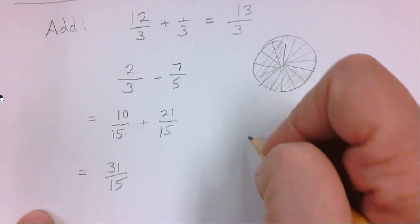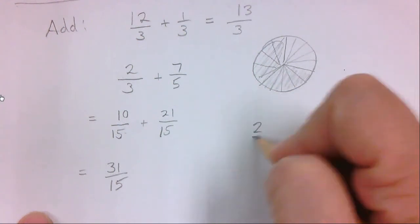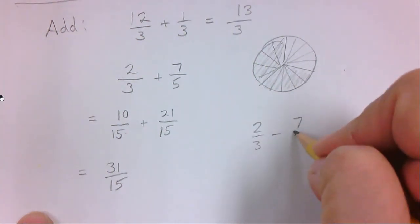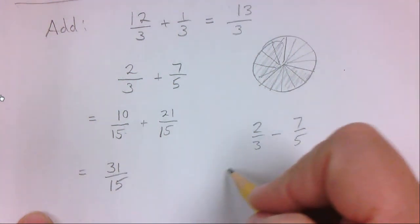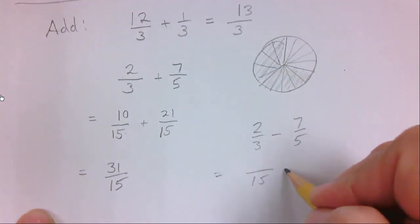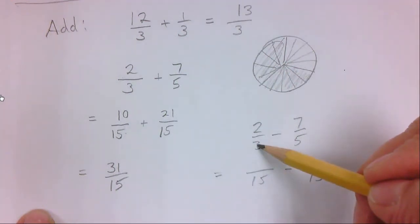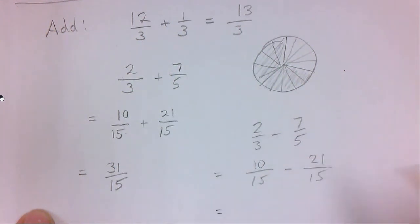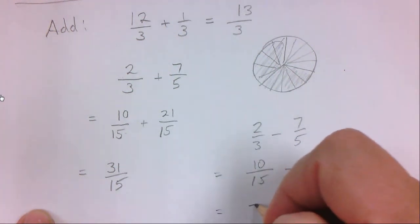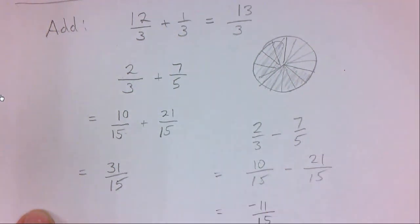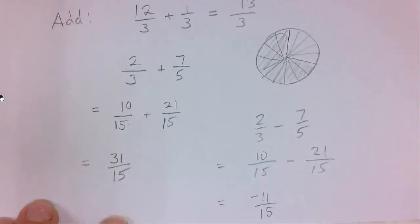And that's adding. Subtracting is exactly the same. I could do two-thirds minus seven over five. Then that same thing, I'd have to pick the common denominator. I would have to see what do I do to the denominator to get there. It's times five, so do the same to the top. This is times three, so do the same to the top. And now I just do it as a subtraction. 10 minus 21 is negative 11 over 15. That's addition and subtraction of fractions.